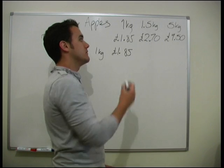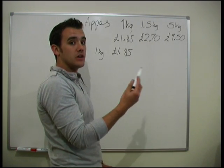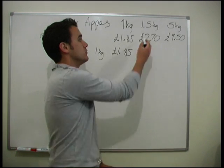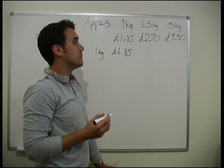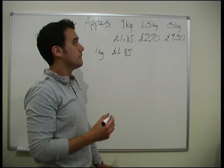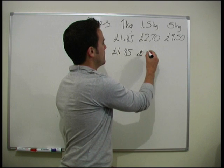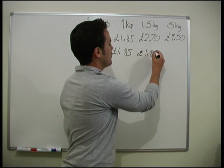1.5kg bag, so we need £2.70 divided by 1.5, or £2.70 divided by 3 times by 2. So £2.70 divided by 3 gives us 90p, times 2 gives us £1.80. So we find they are £1.80.